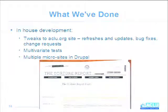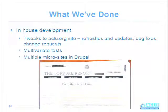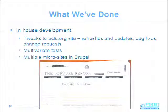We've also done a lot of multivariate testing. Because we're privacy-conscious, we can't use Google Optimizer, which is what most nonprofits use. We use Omniture's Test and Target instead, but that still works nicely with Drupal. We've been able to do multivariate tests on donation path, donation link placement and terminology, and we're planning to do more in the coming months — expanding beyond donation and fundraising to look at click-through as well.